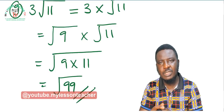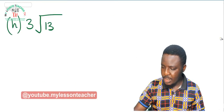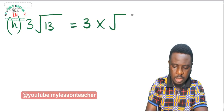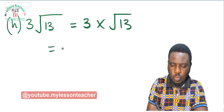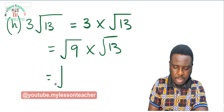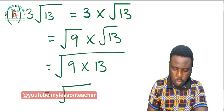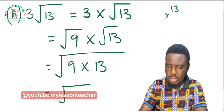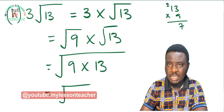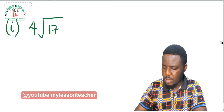Don't forget to like our video as you watch, and subscribe if you are yet to do that, and share the link with your friends and family. Example H: 3 root 13. This equals 3 times root 13. Root 9 gives us 3, so it becomes root 9 times root 13, which simplifies to root of 9 times 13. 9 times 13: 9 times 3 is 27, write down 7 and carry 2; 9 times 1 is 9 plus 2 is 11 — giving root 117.